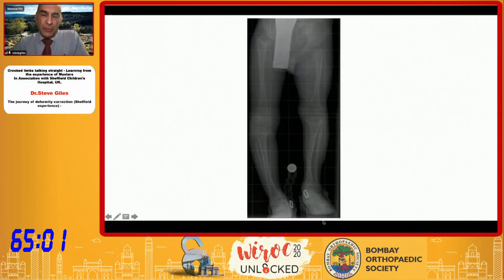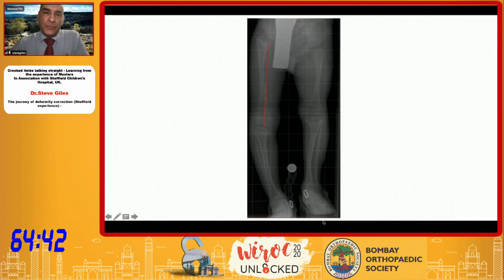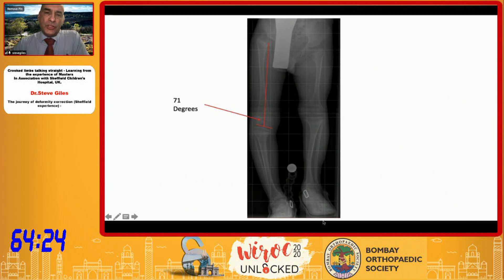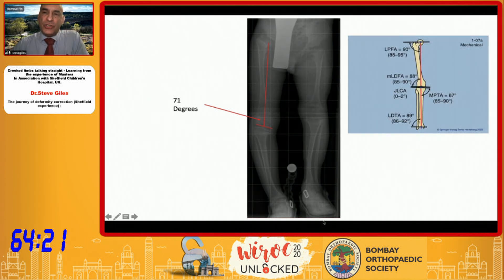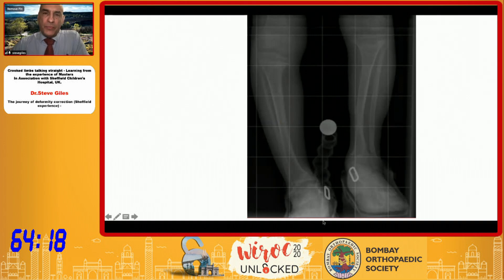For example, in this case we have done the mechanical axis view showing a medial varus deviation. Segmental analysis of the femur measures 71 degrees, indicating significant valgus within the femur. However, overall there is a varus in the entire lower limb, so we then need to check the tibia as well.